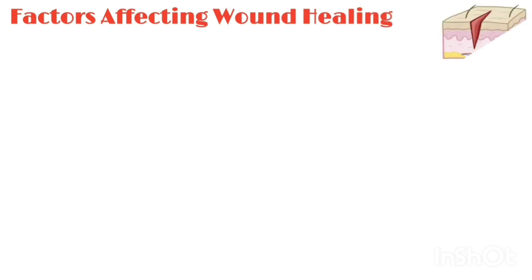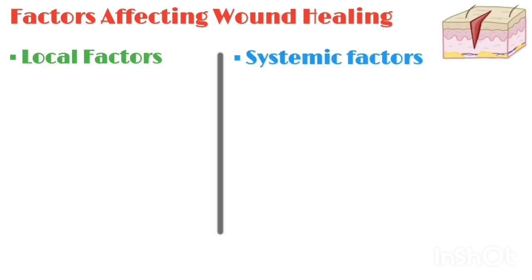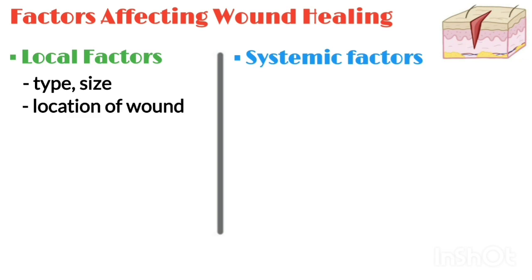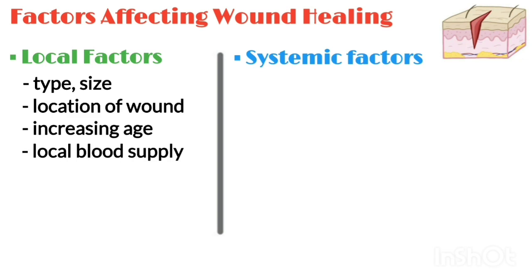Factors affecting wound healing. There are several factors that affect the success of any wound healing. They can be divided into local factors and systemic factors. Local factors include type, size, and location of wound, increasing age, local blood supply, and comorbidities.